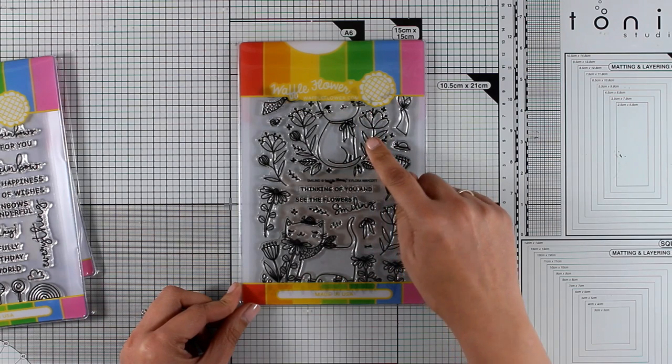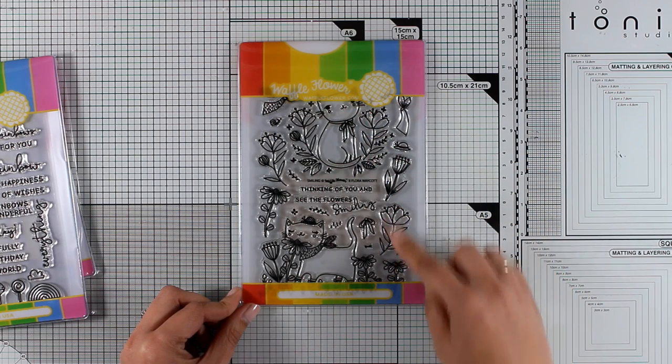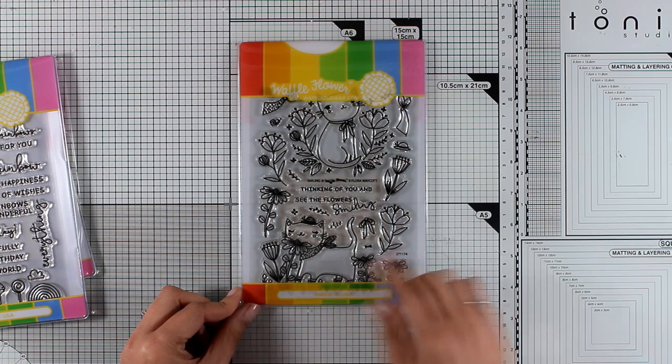Look at this adorable card. This stamp set comes with two cats and lots of flowers to embellish your card. It's called Smiling.